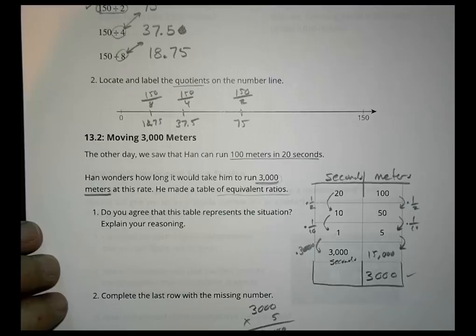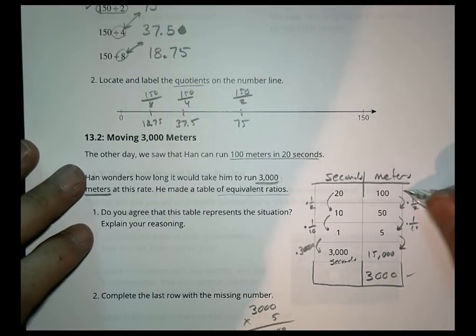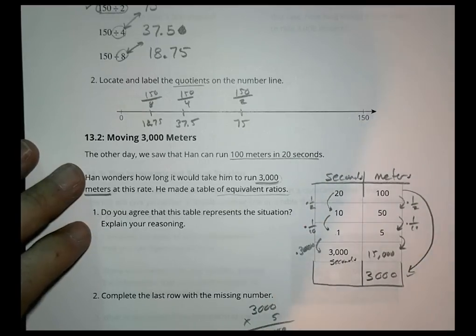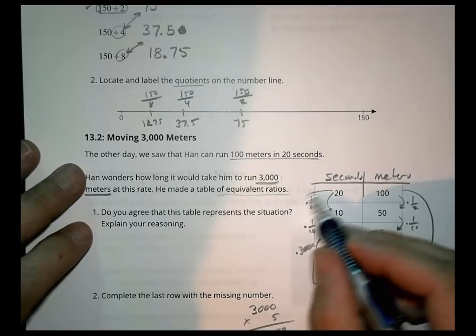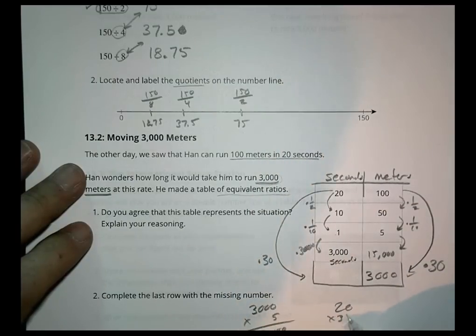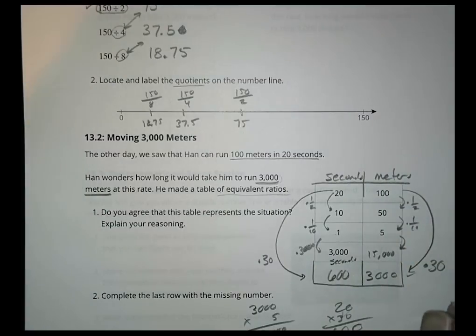Number 2 says complete the last row. To go from 1 to 3,000 is times 3,000, so 3,000 times 5 is 15,000. That means in 3,000 seconds he can go 15,000 meters. That's great information, but it wasn't what he wanted to know. He wants to know how far will it take to go 3,000 meters.